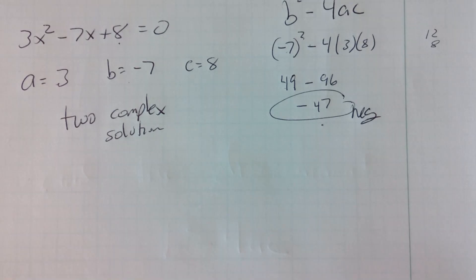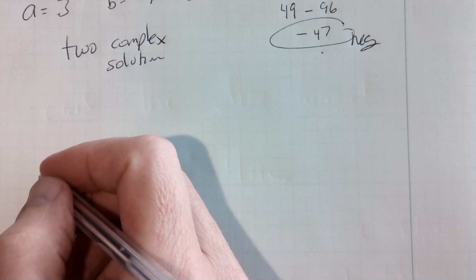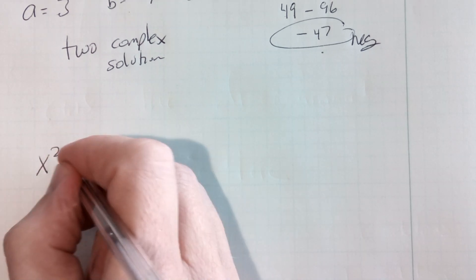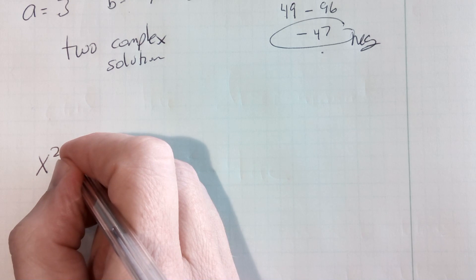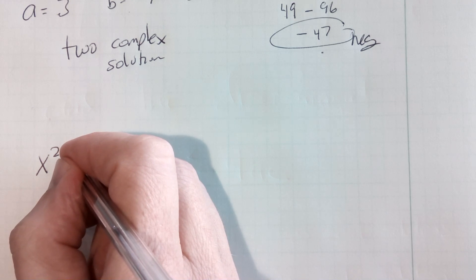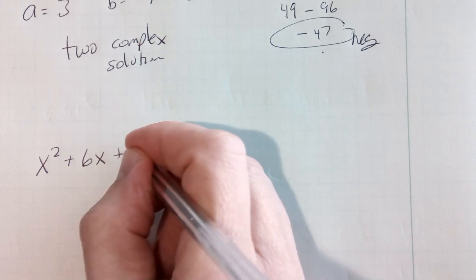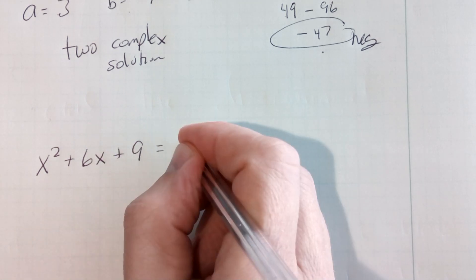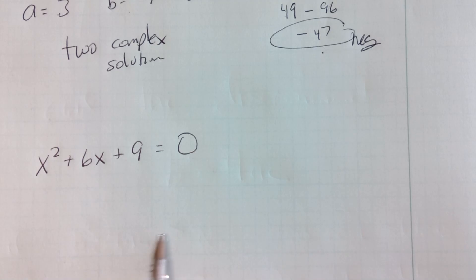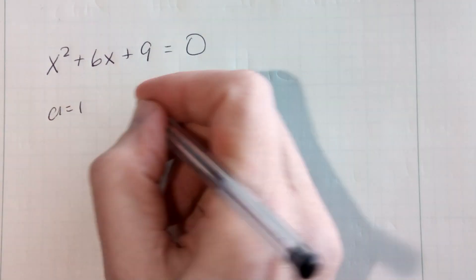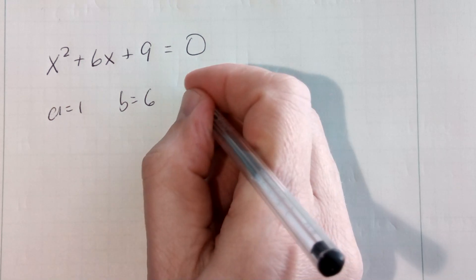Now, remember, if that all comes out to be 0, let's try, let's see if I can think of one really quick. Let's do x-squared plus 6x plus 9 equals 0. If I was to discriminate on this one, a equals 1, b equals 6, c equals 9.